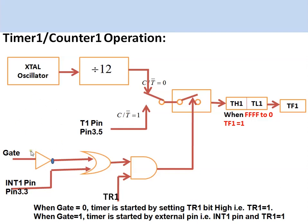For Timer 1 or Counter 1 operation, the same principles apply. When GATE equals 0, the timer is started by setting the TR1 bit high — the timer or counter is controlled only by the TR1 bit of the TCON register. When GATE equals 1, the timer is controlled by the external INT1 pin (P3.3), which must be high along with TR1, giving external control to Timer 1 or Counter 1.